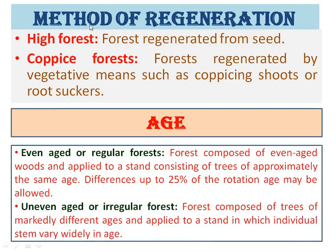On the basis of method of regeneration, we have two types of forest: high forest and coppice forest. High forest is the forest regenerated from seed only — the source of regeneration is only the seed. Coppice forest is the forest regenerated by vegetative means such as coppicing shoots or root suckers. This is a very important question that has come in many exams and is repeated often. Forest regenerated from seed — the correct answer is high forest.